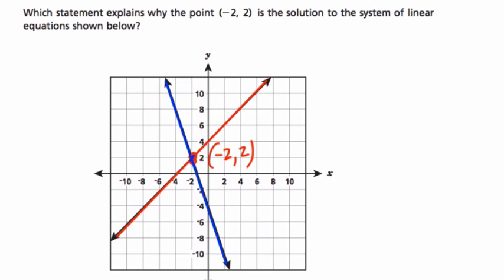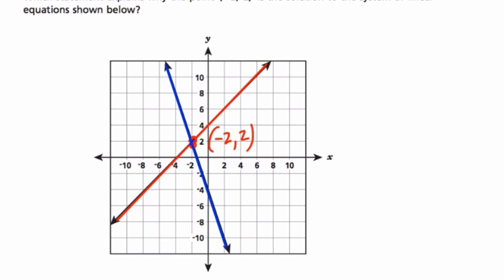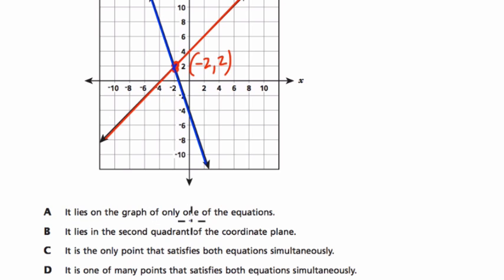So let's see what it says. Why is this a solution? Here's our choices. It lies on the graph of only one of the equations. Well, that's not true. It's on both.